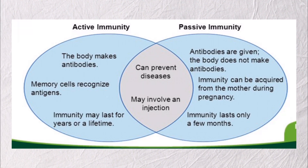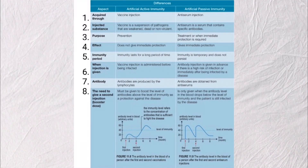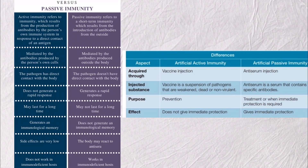The conclusion is that both types of immunity share one mission: to protect the body from infectious disease by involving interaction between antibodies and antigens. For the differences, there are eight aspects to compare. The first aspect is how the immunity enters the body — for active immunity, it is through vaccine injection; for passive immunity, it is through anti-serum injection.